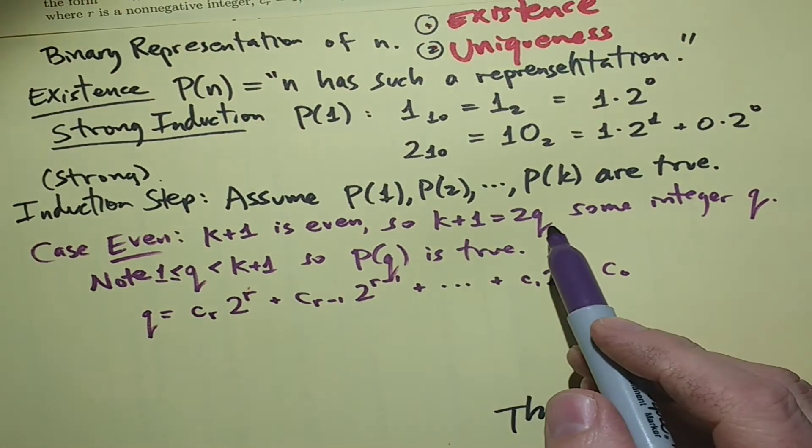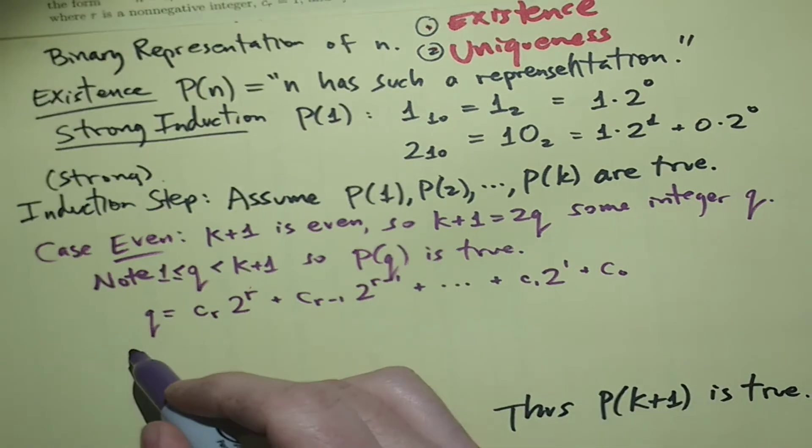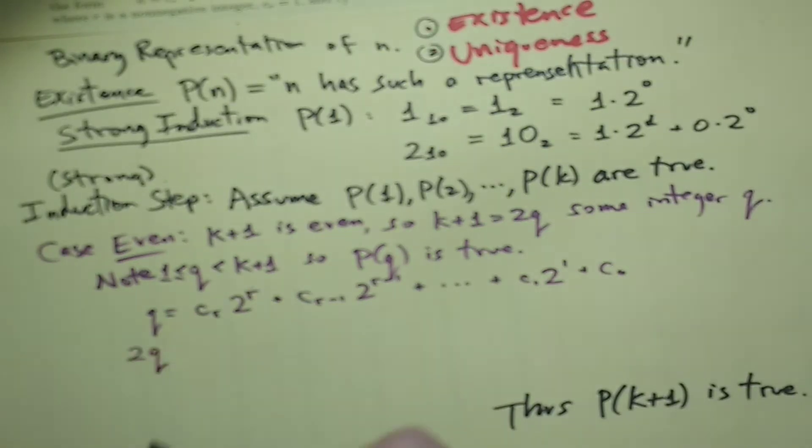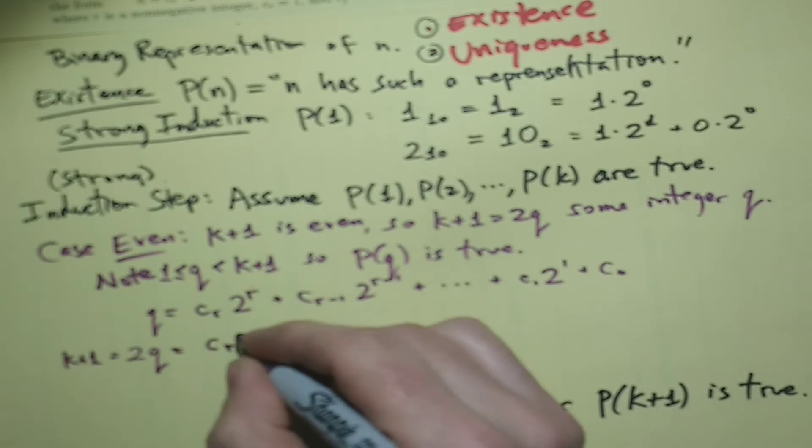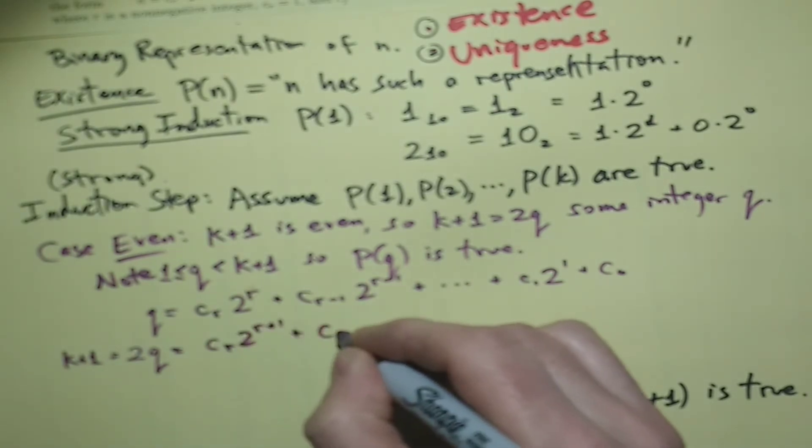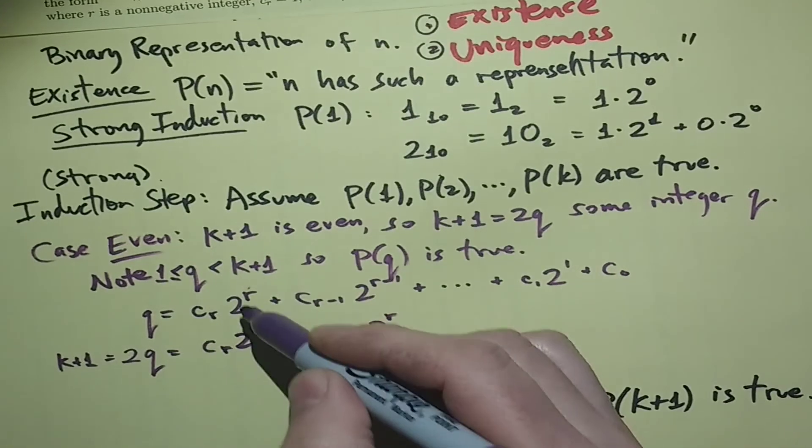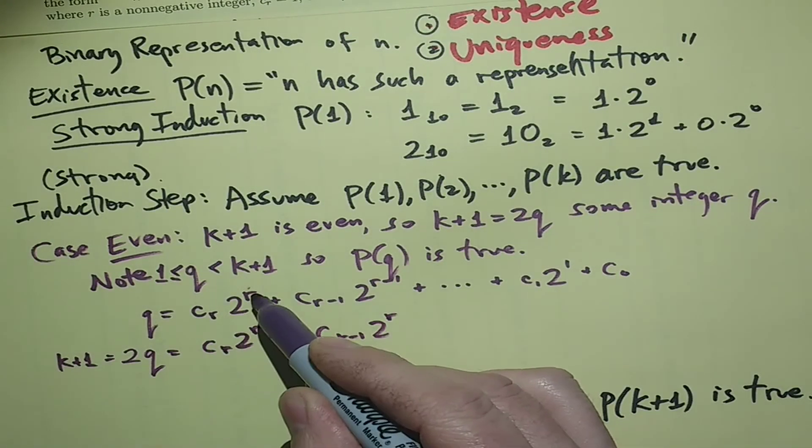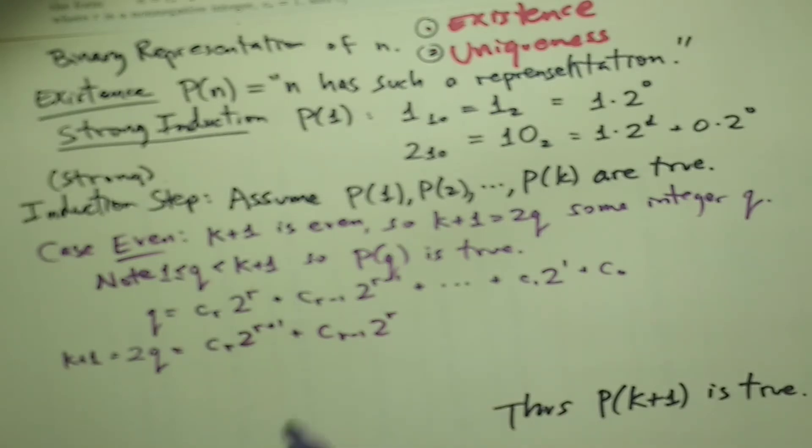But now when we multiply it by 2, 2q, which by the way is k+1, that's k+1, that is, that's going to equal cr 2 to the r+1 plus cr minus 1, 2 to the r, because we're multiplying everything by 2. I could multiply 2 to the r times 2 to get 2 to the r+1 and so on.